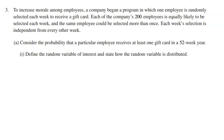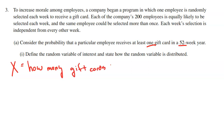We're considering the probability that a particular employee receives at least one gift card over a 52-week year. So define the random variable. I'm going to define this random variable as X — you could use G for gift card or C for card, but I'll use a generic X. X is defined as the number of gift cards an employee wins over 52 weeks.